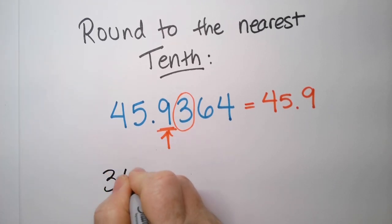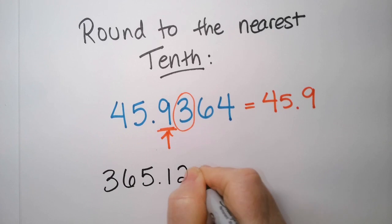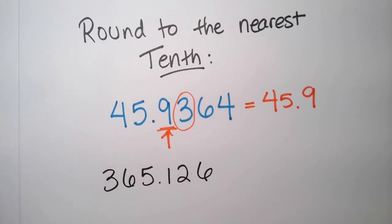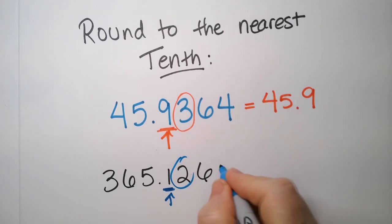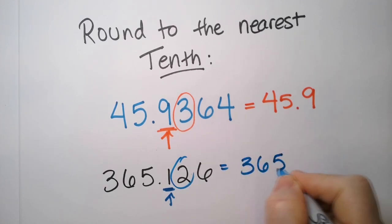How about 365.126. So first, we've got to find the tenth, which is here, and then we look one to the right. We look next door, and we see this number is not 5 or above, so this stays as 365.1.